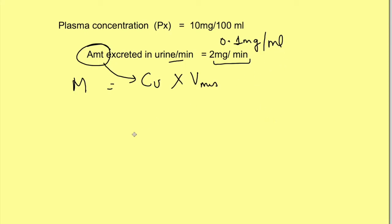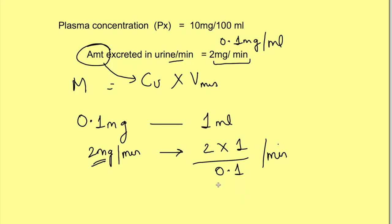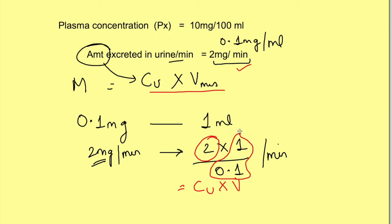So we know that 0.1 mg of substance is present in 1 ml of plasma, and 2 mg of the substance is lost in urine per minute. If we find out how much plasma this 2 mg was present in, we can say that that much plasma has been cleared of the substance. By simple math: if 0.1 mg was in 1 ml of plasma, then 2 mg was in 20 ml of plasma being cleared per minute. The clearance rate formula comes from this: the 2 mg per minute is the concentration of the substance in urine multiplied by the flow rate of urine, and this is divided by the plasma concentration of the substance.